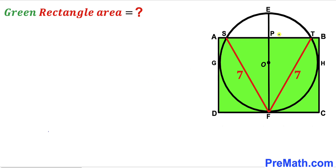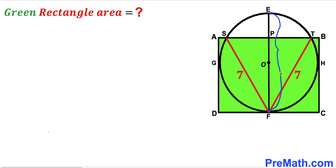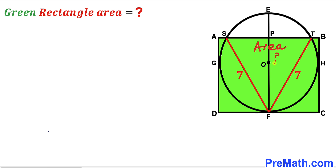Welcome to PreMath. In this video we have a circle with center O partially inscribed in a green shaded rectangle ABCD, such that points F, G, and H are points of tangency. EF is the diameter, and the two chords SF and TF are seven units each. Our task is to calculate the area of the green shaded rectangle ABCD.